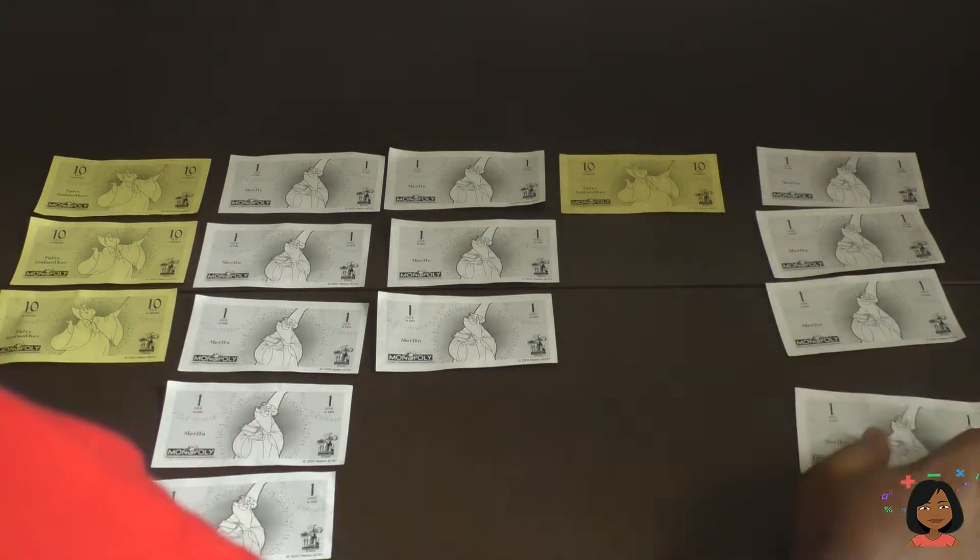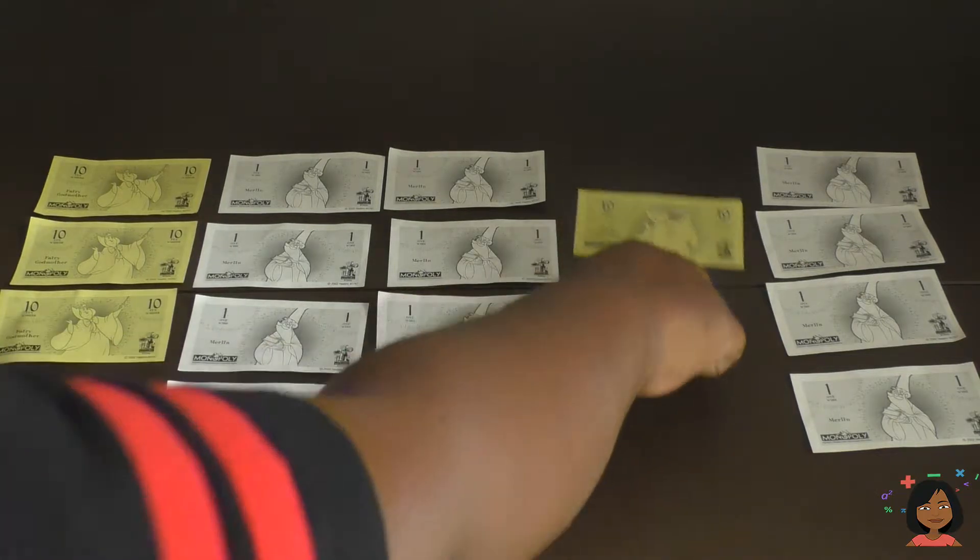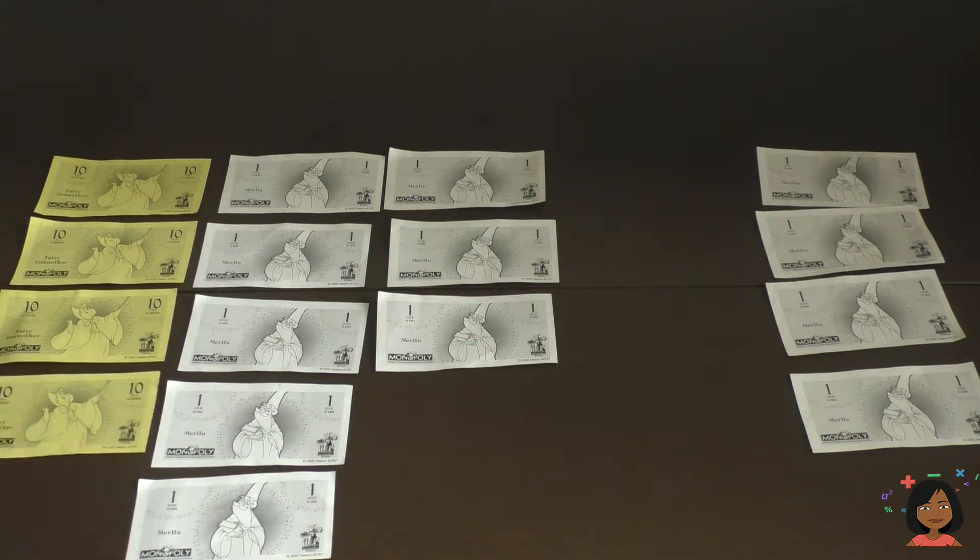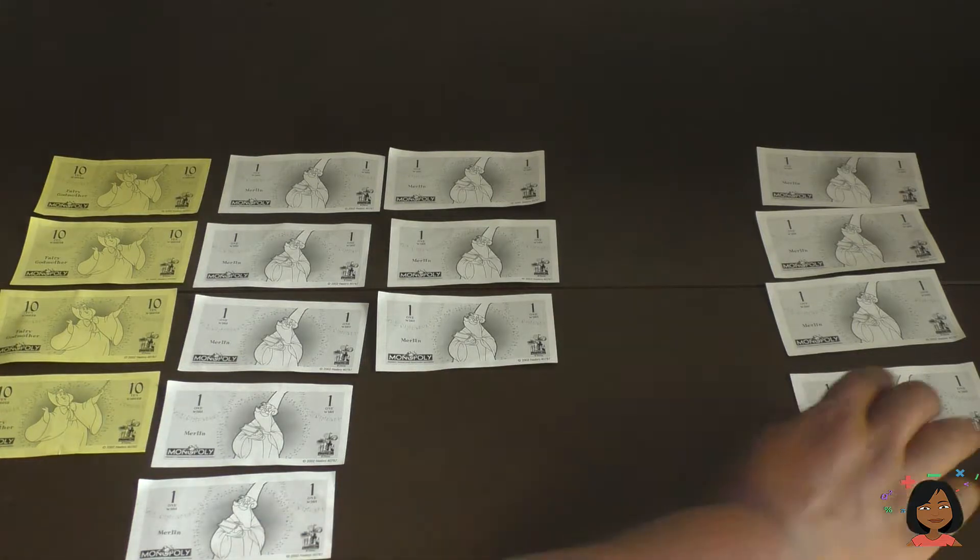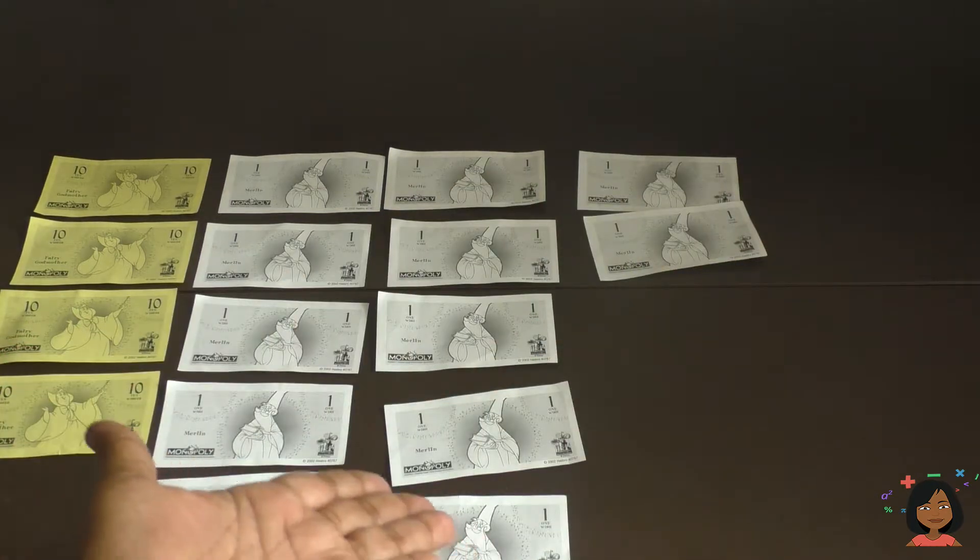Let's rearrange this and see what we actually have for total. As far as tens we have one two three four tens and as far as ones we have one two three four five six seven eight nine ten eleven twelve.